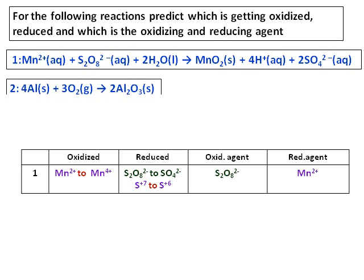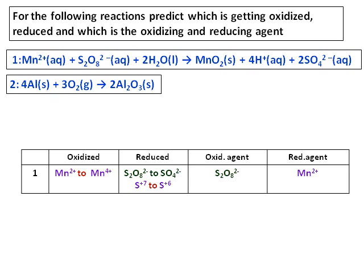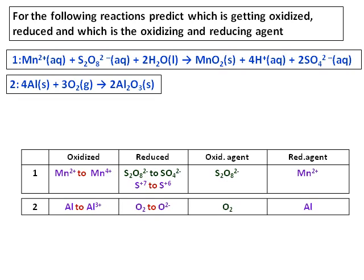Similarly, for the second reaction, aluminum is getting converted into Al3+. Therefore, this is loss of electrons. Aluminum is oxidizing. Oxygen O2 is getting converted into O2-. It gains electron. Therefore, this is reduction. And oxygen will be the oxidizing agent and aluminum will be the reducing agent.